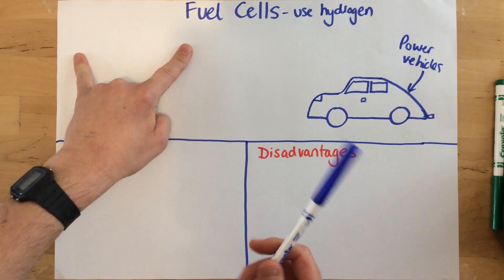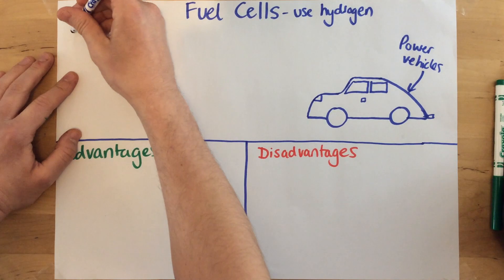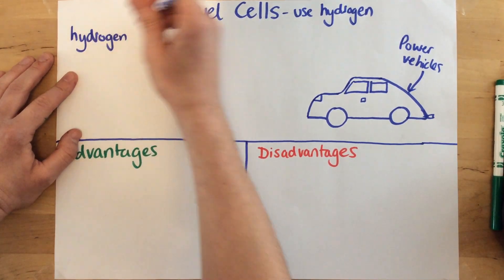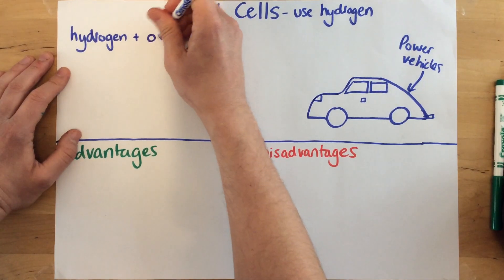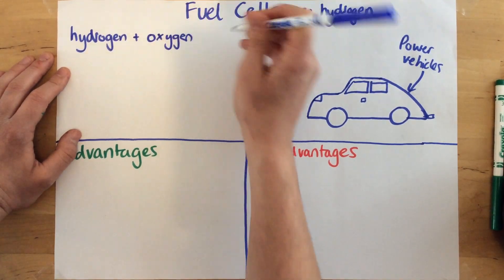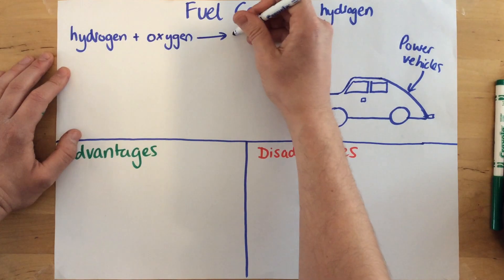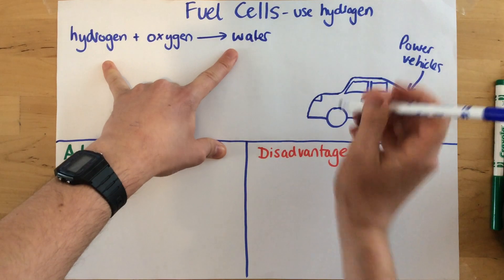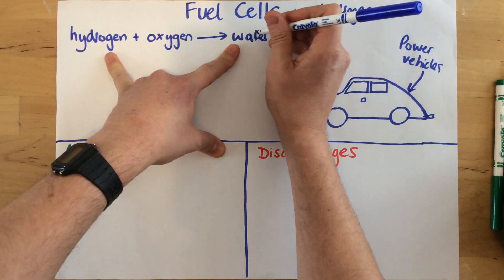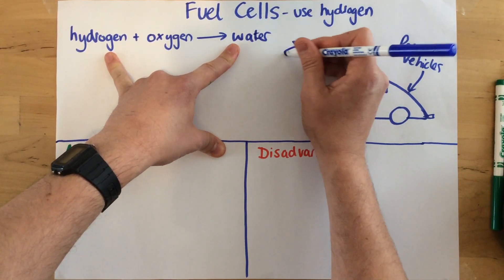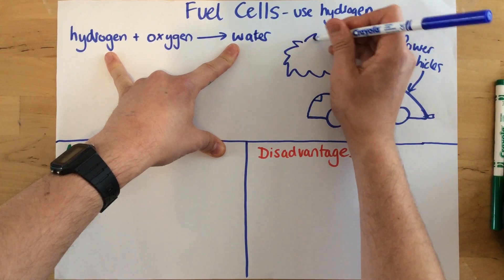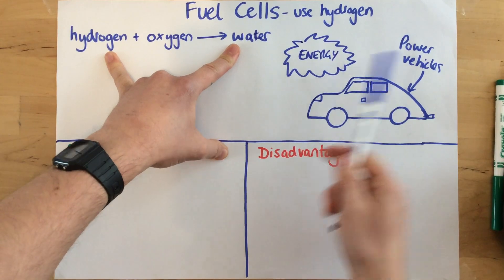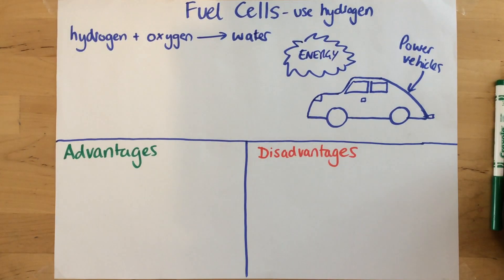So how do they work? If we have a look, I'm going to show you the equation that goes with fuel cells. Within a fuel cell we have a simple reaction happening: hydrogen reacts with oxygen in order to release water. As this reaction occurs, we also have the release of a lot of energy, and this energy could be used to power vehicles like the one pictured here.